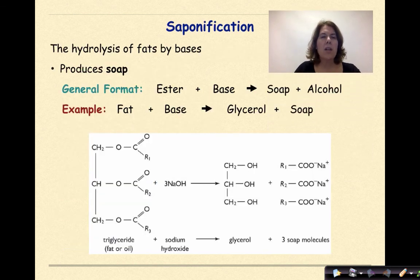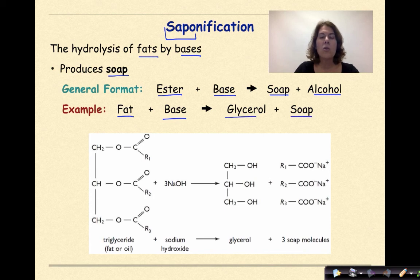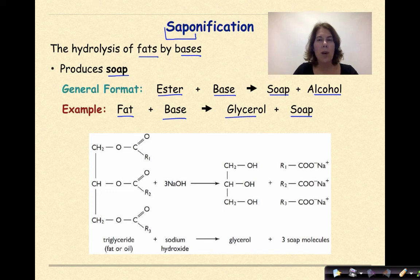Saponification is the hydrolysis of fats by bases and produces soap. If you take the first four letters and rearrange them, they actually produce the word soap. The general format is an ester and a base producing soap and alcohol. For an example, a fat plus a base produces glycerol and soap, as we can see in the reaction below. The big thing with saponification is just being able to recognize it and that it does produce soap as a product.